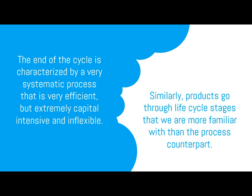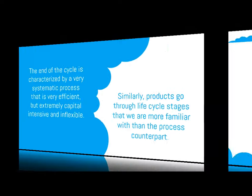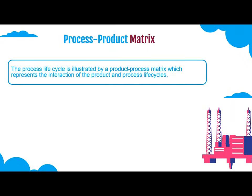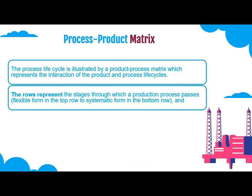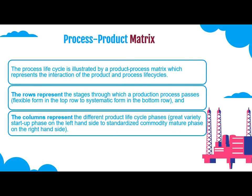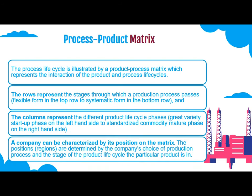Similarly, products go through lifecycle stages that we are more familiar with than the process counterpart. The process lifecycle is illustrated by a product-process matrix, which represents the interaction of the product and process lifecycles. The rows represent the stages through which a production process passes — flexible from the top row and systematic in the bottom row. The columns represent the different product lifecycle phases, from great variety at the startup phase on the left-hand side to standardized commodity at the mature phase on the right-hand side.